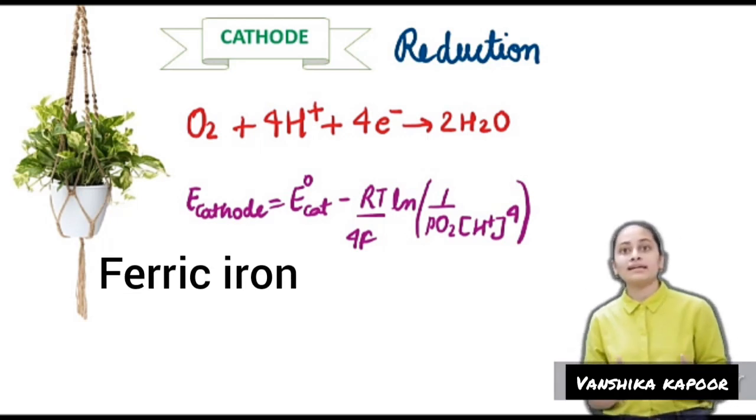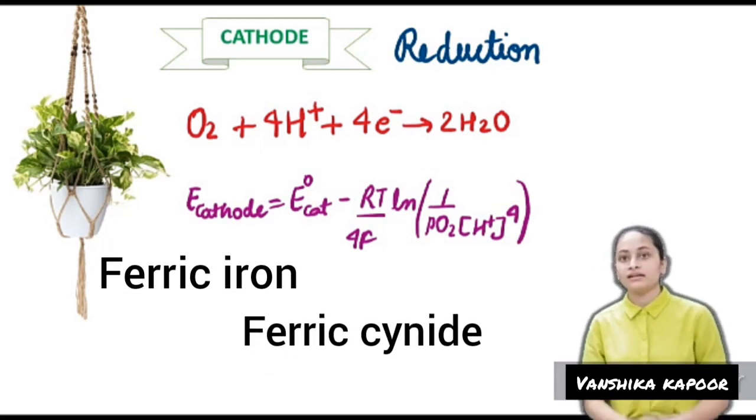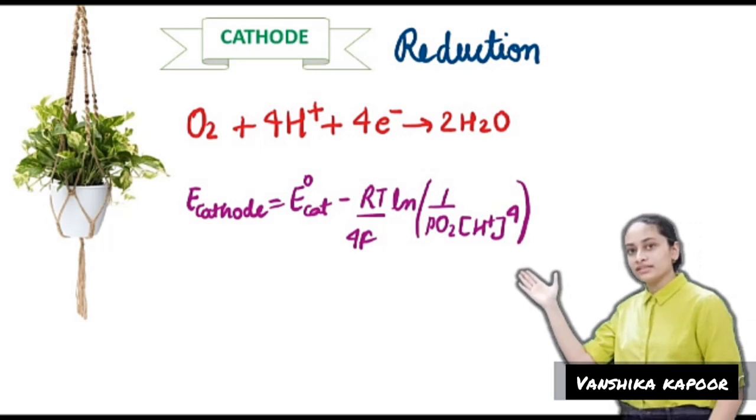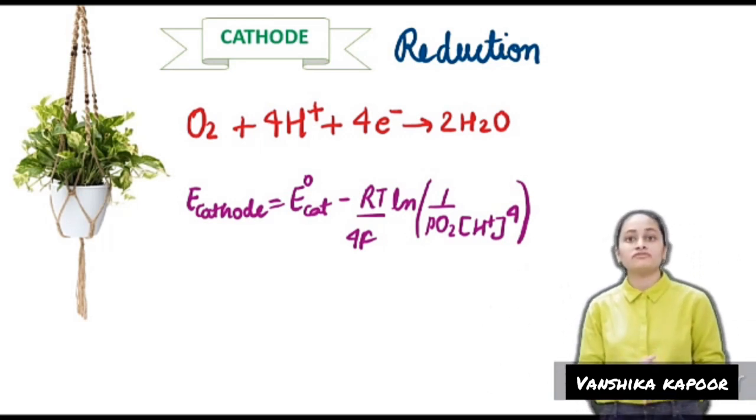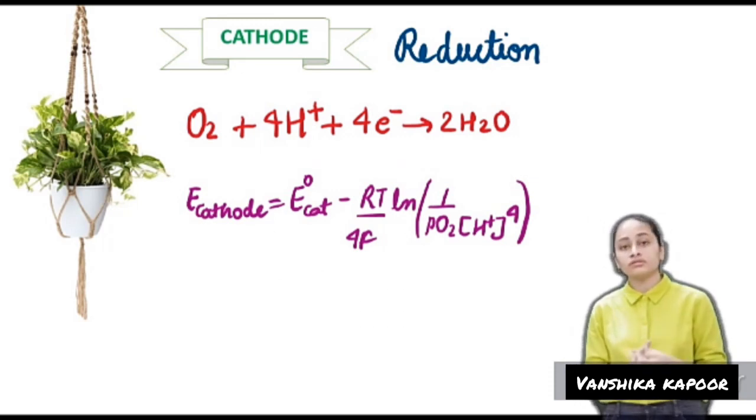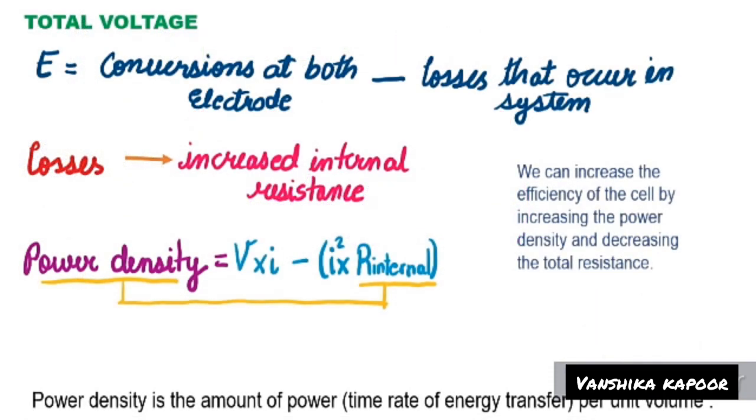So we use ferric iron in the form of ferric cyanide. However, this makes the maximum voltage obtained from PMFC lower compared to the oxygen cathode. Voltage is obtained by conversions at both electrodes minus losses that occur in the system.